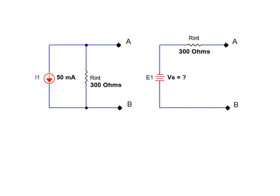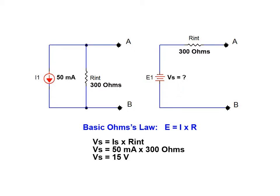Ohm's law is once again employed to calculate the required voltage source value. The value is arrived at by multiplying the current times the resistance. As can be seen, the required voltage value is 15 volts.